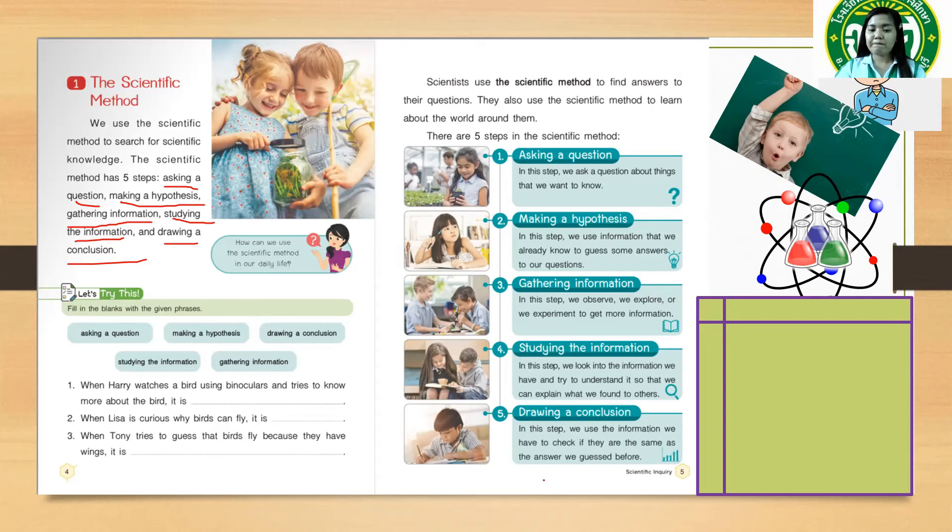The last one is drawing a conclusion. In this step, we use the information we have to check if they are the same as the answer we guessed before. So you are going to use the information and then you draw. For example,